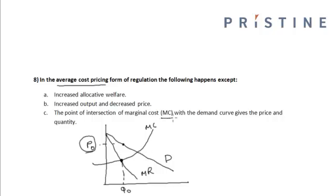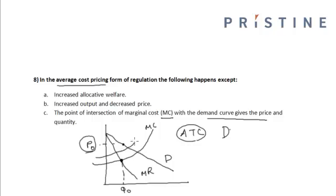In average cost pricing form of regulation, the price is given by the intersection of the average total cost curve with the demand curve. So once we have the ATC curve, its intersection with the demand curve gives the optimal quantity and the optimal price produced in a monopolistic environment under average cost pricing.